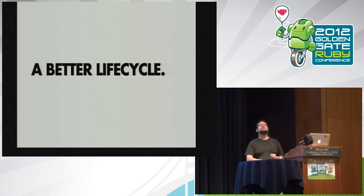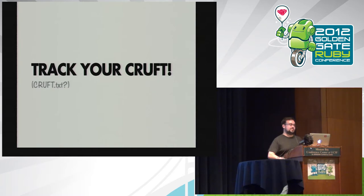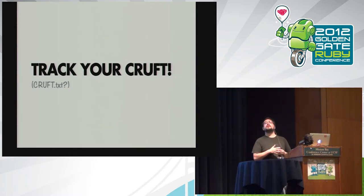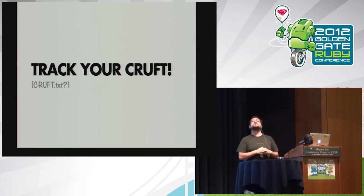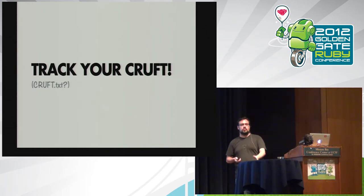So what's a better way to deal with this? What's a better lifecycle? I think people should track their cruft — maybe in a cruft.txt or cruft.markdown. When they write some code that's not optimal, when they write a mess, they should write down somewhere — not inline in the code, but somewhere — what the assumption that went into that code is.